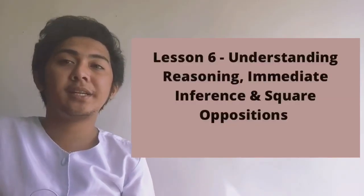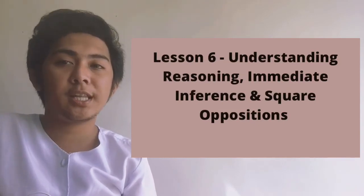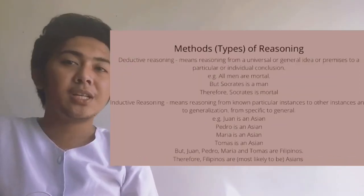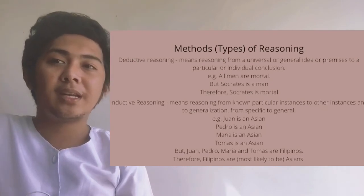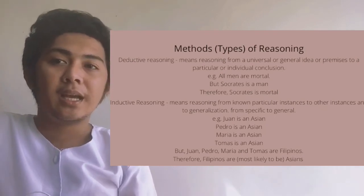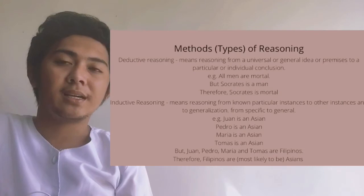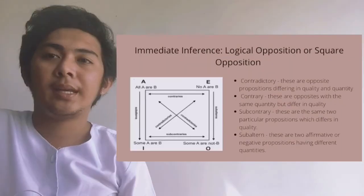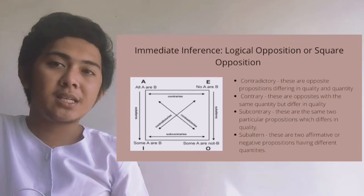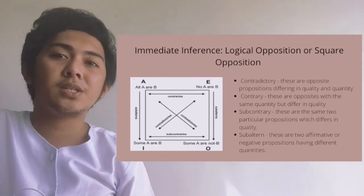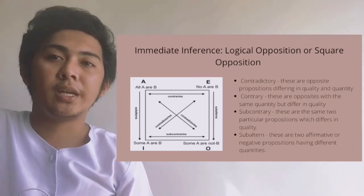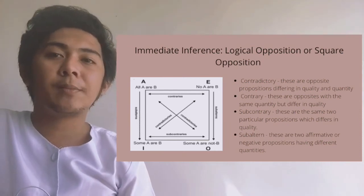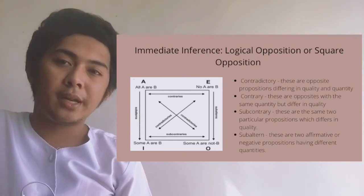Lesson 6 covers understanding reasoning, immediate inference, and the square of opposition. The methods or types of reasoning include deductive reasoning and inductive reasoning, with examples provided. For immediate inference and logical opposition — or square of opposition — we have: contradictory, contrary, subcontrary, and subalternation.